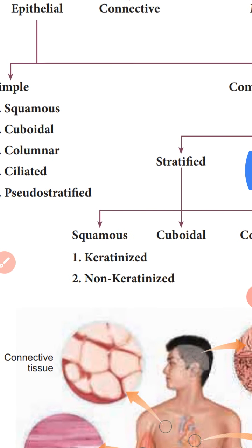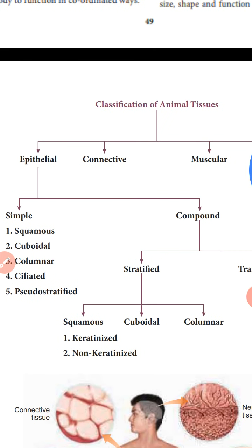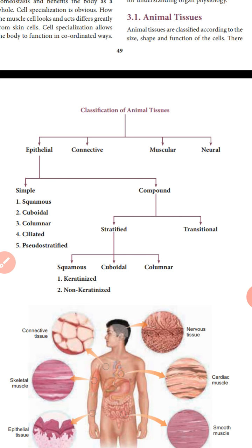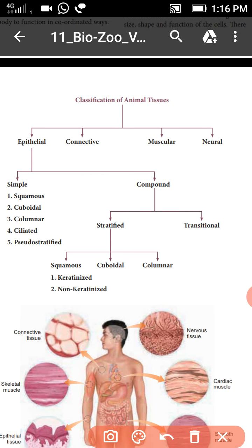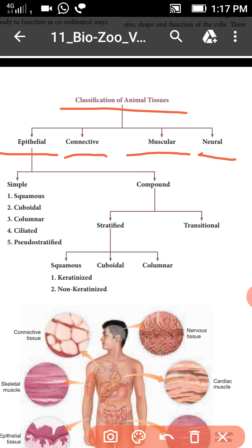Now let's come to the classification of animal tissues. There are four major types: epithelial tissues, connective tissues, muscular tissues, and neural tissues. The epithelial tissues have two categories: simple epithelium and compound epithelium.